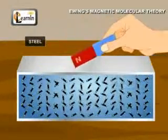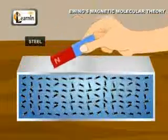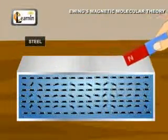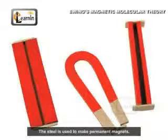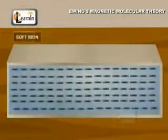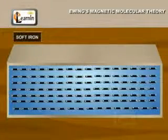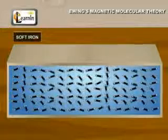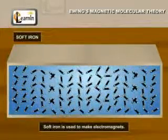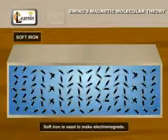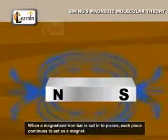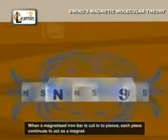In certain substances like steel, the alignment of molecular magnets produced during magnetization remains permanent. Therefore, steel is used to make permanent magnets. But in some substances like soft iron, the alignment is disturbed easily, so soft iron is used to make electromagnets.